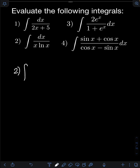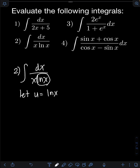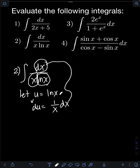For number 2, we have the integral of dx over x ln x. Let's apply u-substitution first. Let u be equal to ln x. Taking the derivative of both sides: derivative of u is du, and the derivative of ln x is 1 over x dx. So we have created the term dx over x in the original integral, which is now equal to du.